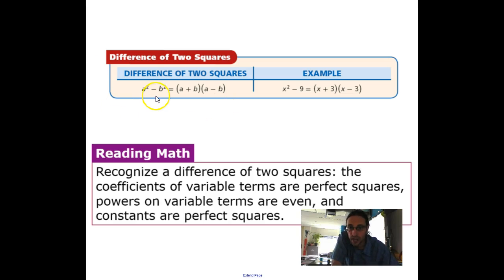So, here, they give you a formula and a nice little example. And, just a little reading math. Recognize the difference of two squares: coefficients of variable terms are perfect squares, powers on variable terms are even, and constants are perfect squares. Now, I'm just going to throw this out here right now because some of you might be like, wait a minute, what are my perfect squares? Let's review.